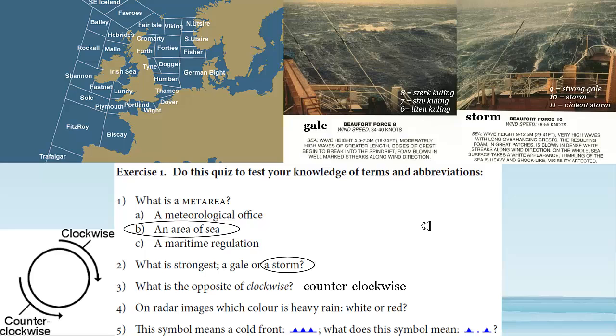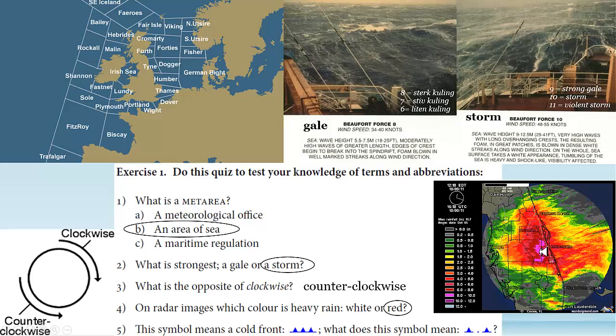On radar images, which color is heavy rain — white or red? Here's a picture of Florida, and you can see red paint, and then it's getting magenta in the middle. So generally, heavy rain is going to be red, and on this picture the really intense rain from Florida even turns magenta. This symbol here means a cold front — you find these on a radio fax or marine weather chart. What does this symbol mean? It means a developing cold front — it's developing, turning into a cold front.